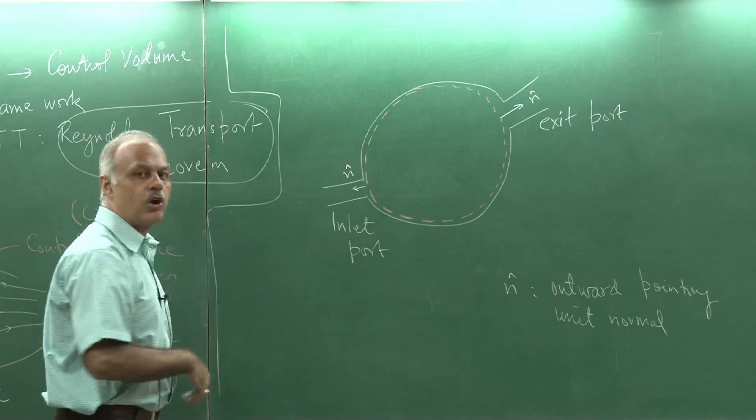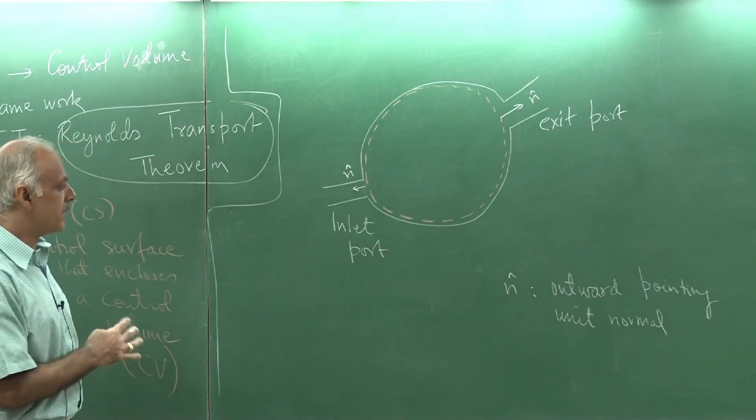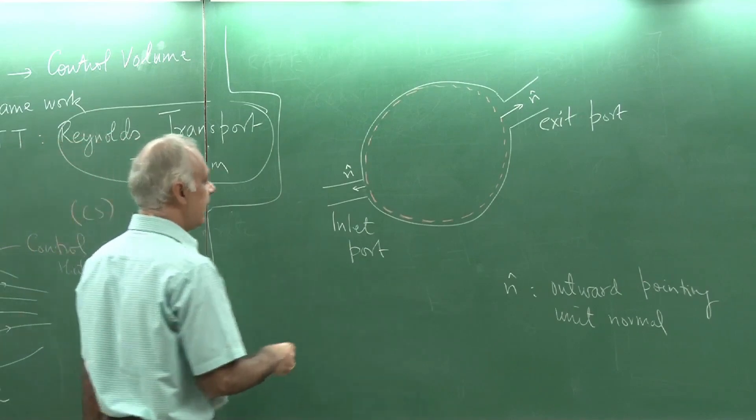As you know, the surface will have two normals. One pointing inside and the other one pointing outside. I pick the one which is pointing outside.